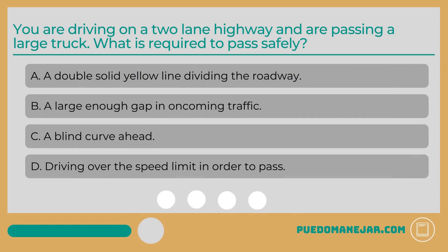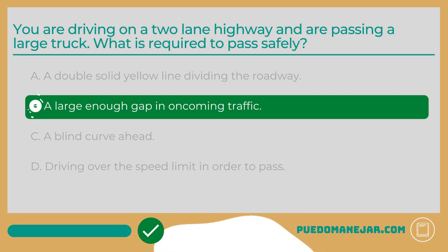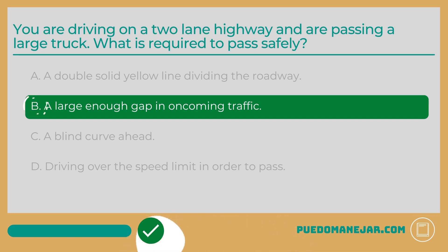You are driving on a two-lane highway and are passing a large truck. What is required to pass safely? A. A double solid yellow line dividing the roadway. B. A large enough gap in oncoming traffic. C. A blind curve ahead. D. Driving over the speed limit in order to pass. The answer is B. You will need a large enough gap and clear view of oncoming traffic. Since trucks are larger, you'll typically need a slightly larger gap to pass the truck completely and return to your lane safely.